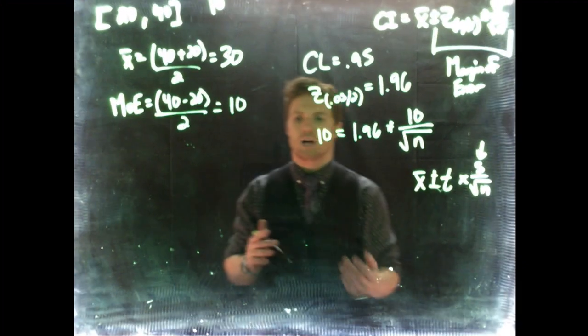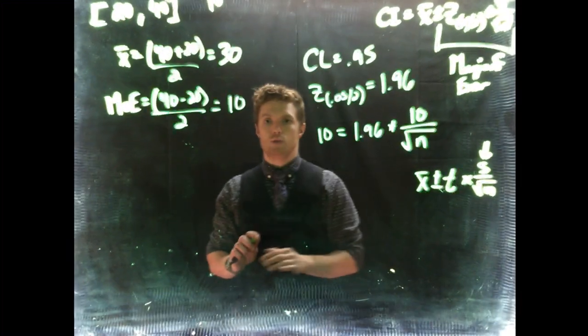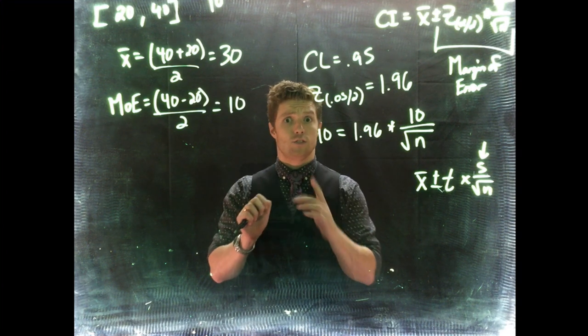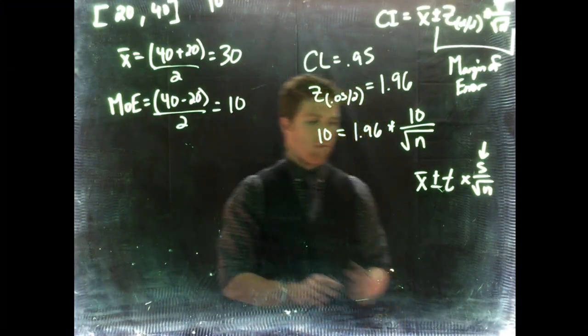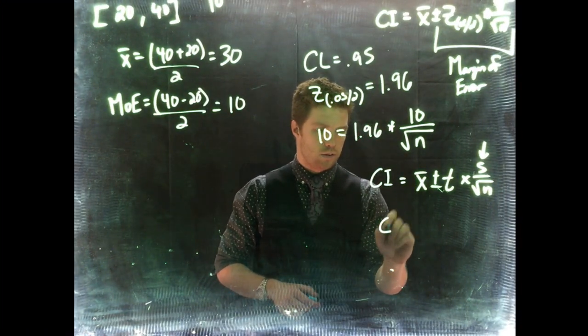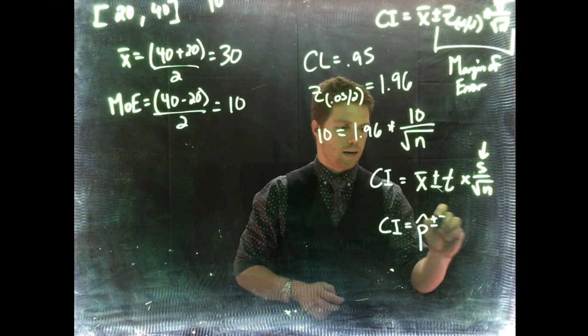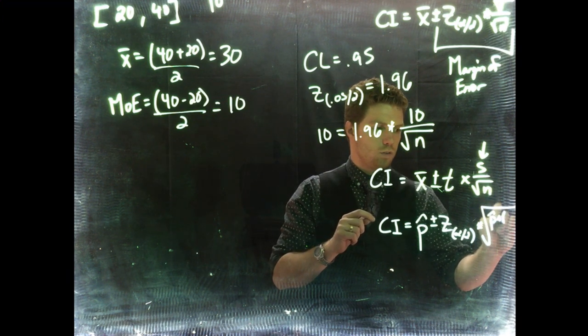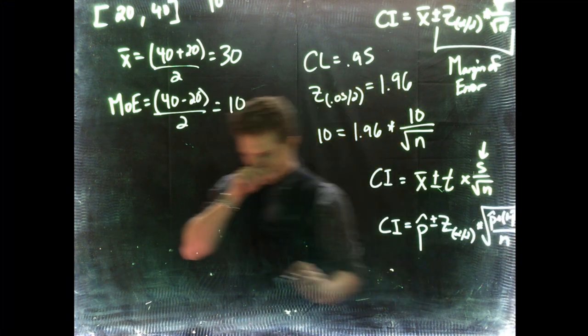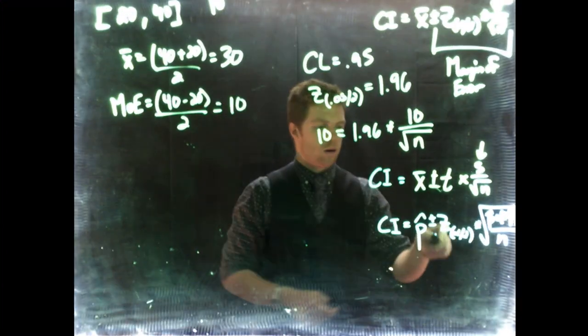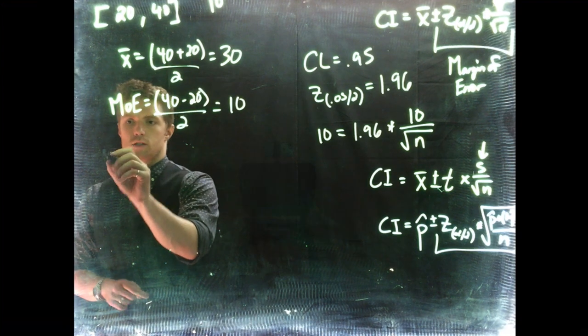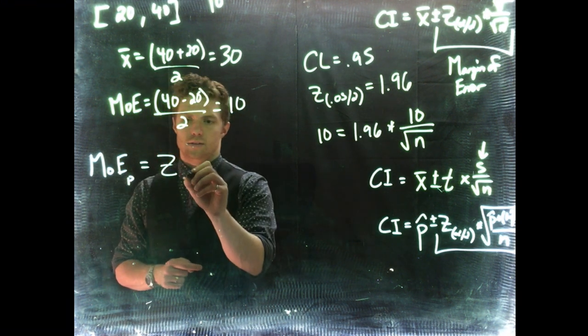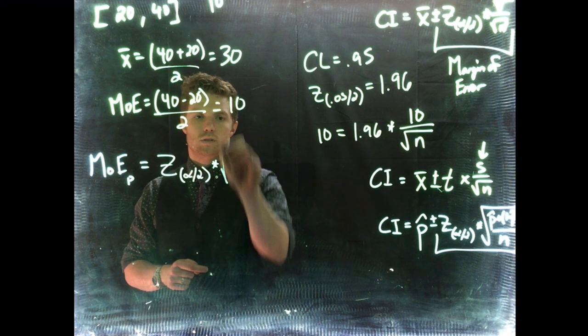But we're able to actually use a really cool trick with sample proportions, because pollsters often want to know before they go out and take a poll: how many people do we need to survey to make sure our margin of error is really tight? Usually pollsters are shooting for a margin of error of about 3%. Let's figure out how we could pull that off. The confidence interval for proportions is p-hat plus or minus z-alpha/2 times the square root of p-hat times (1 minus p-hat) divided by n. The margin of error for a proportion equals z-alpha/2 times the square root of p-hat times (1 minus p-hat) divided by n.